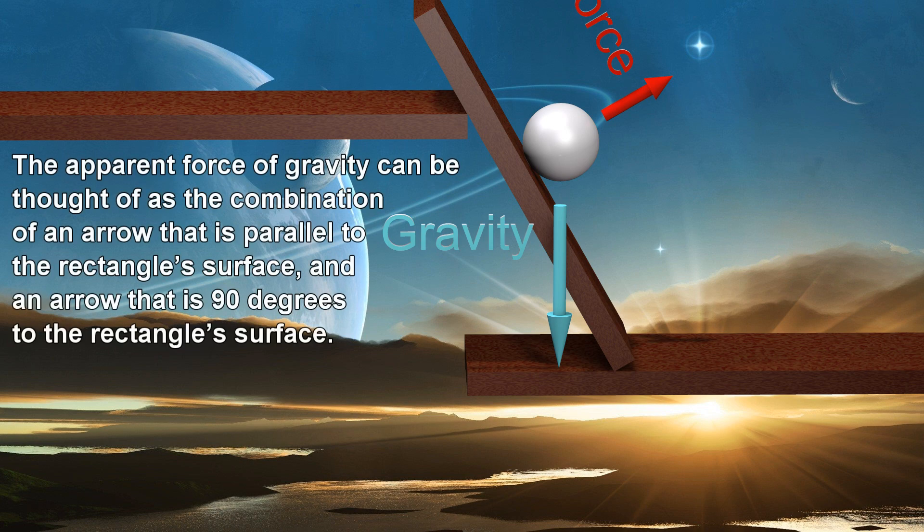The apparent force of gravity can be thought of as the combination of an arrow that is parallel to the rectangle's surface, and an arrow that is 90 degrees to the rectangle's surface.